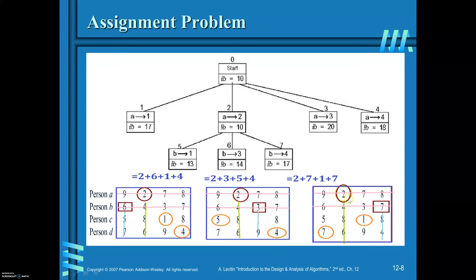When person B is assigned with job 4, strike out the fourth column. What remains is the first and third columns; the third row minimum is 1 and the fourth row minimum is 7. The lower bound for B=job4 is 70. Out of the three lower bounds, the best lower bound is 13 (B=job1), so we branch from that node.